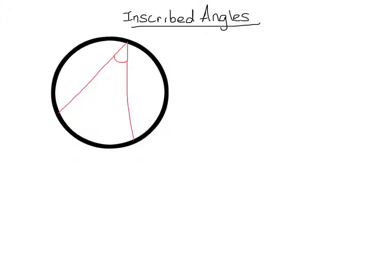Now that we know what an inscribed angle is, we can look at the intercepted arc. Here in blue I'm tracing out the intercepted arc that is related to that inscribed angle. An intercepted arc has endpoints on the sides of an inscribed angle and lies in the interior of the inscribed angle. So I could say that this arc is intercepted by the inscribed angle here.